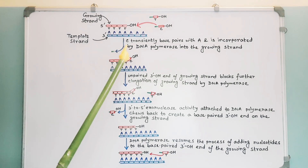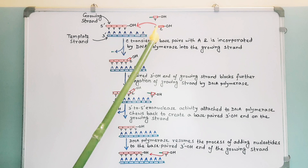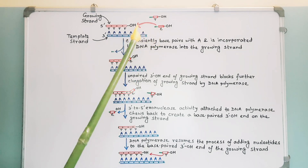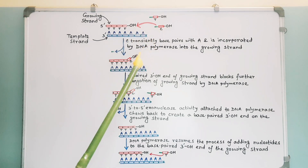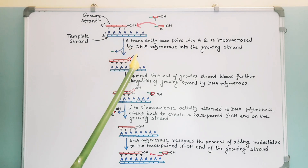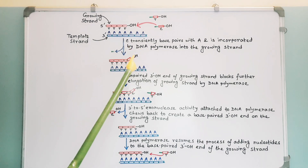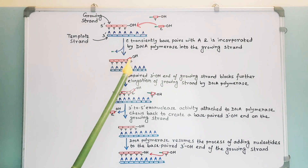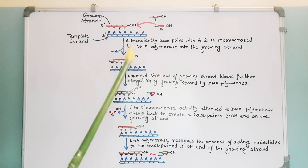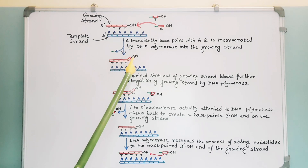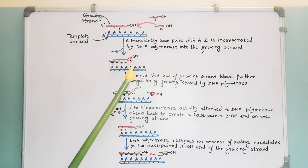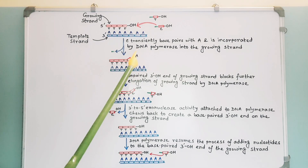You see, a cytosine is accidentally incorporated at the growing 3' OH end of a DNA chain. The incorrect nucleotide has a lower affinity for the moving polymerase. The DNA polymerase also fails to add other nucleotides as well.